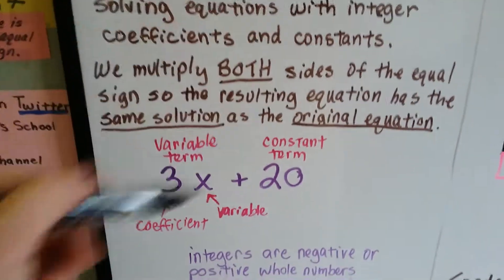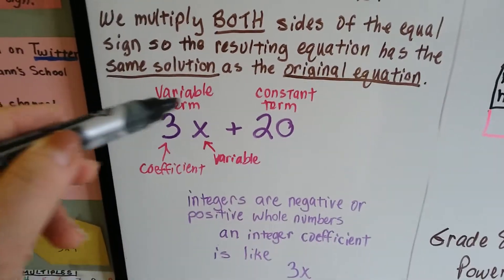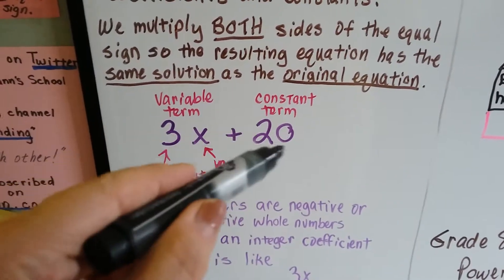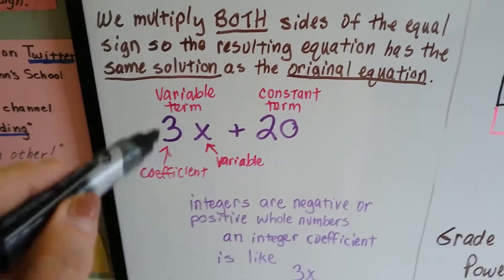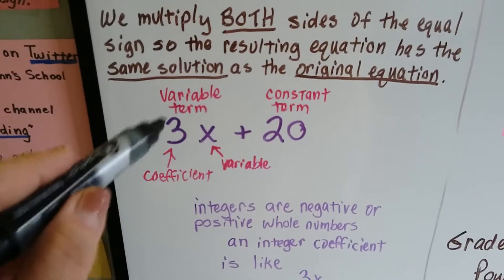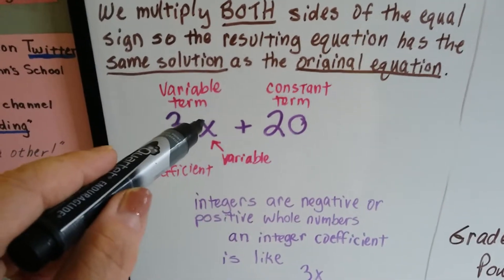So if these words are confusing you, this is a term and this is a term. It's a variable term and that's a constant term. It's a variable term because it's got a variable in it, and this value changes depending on what that variable is worth.